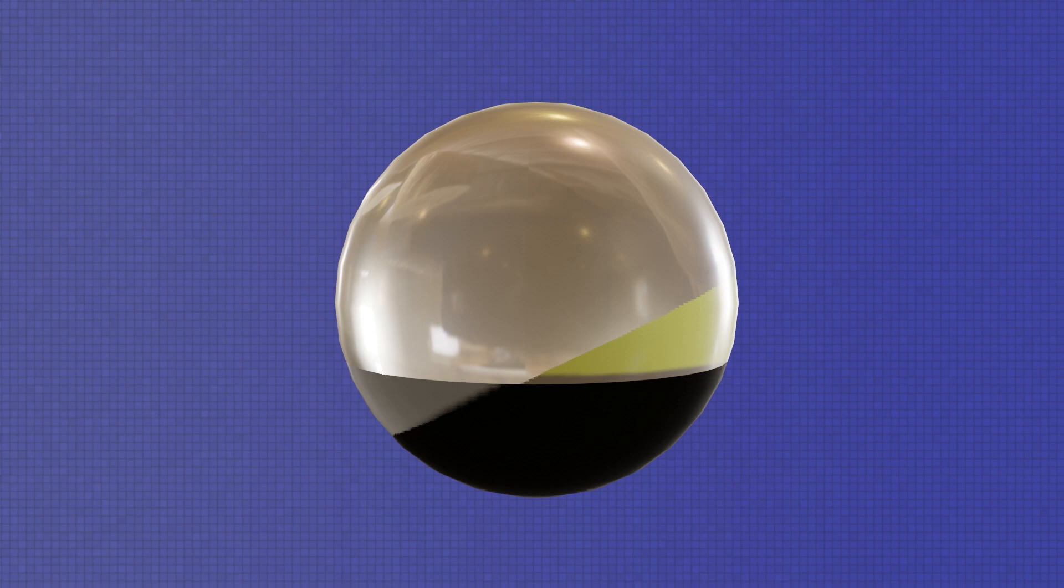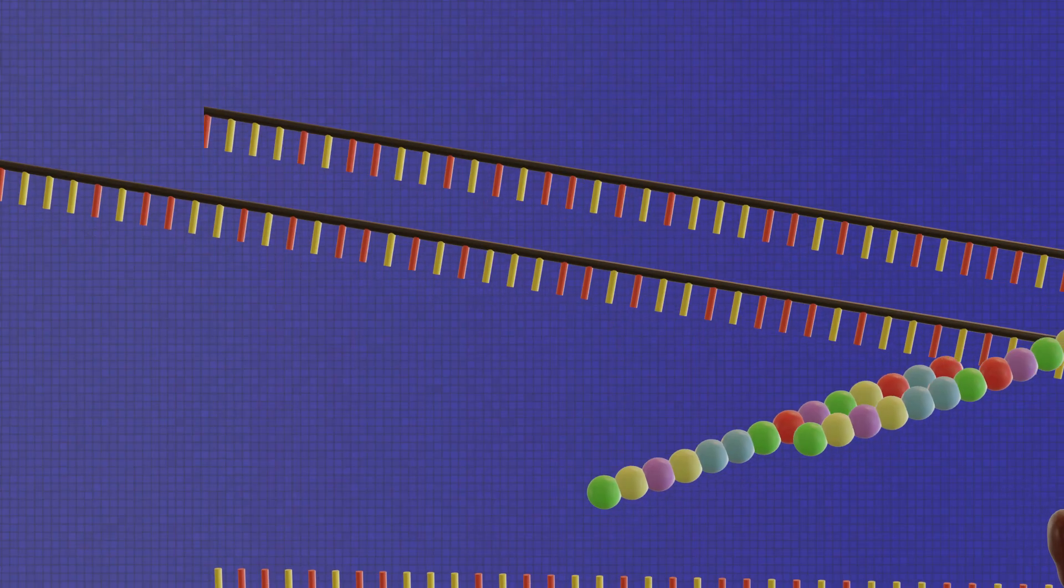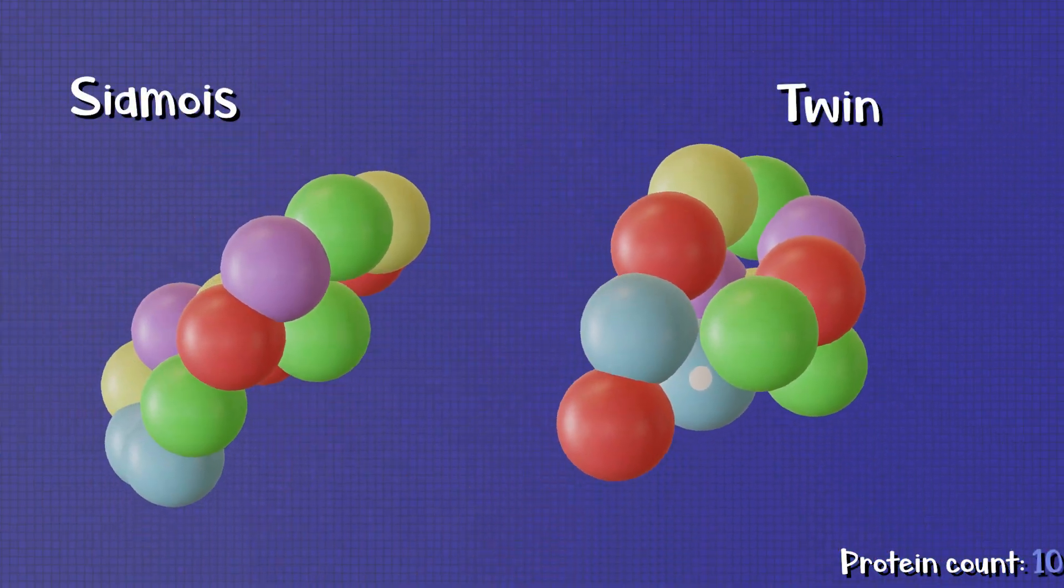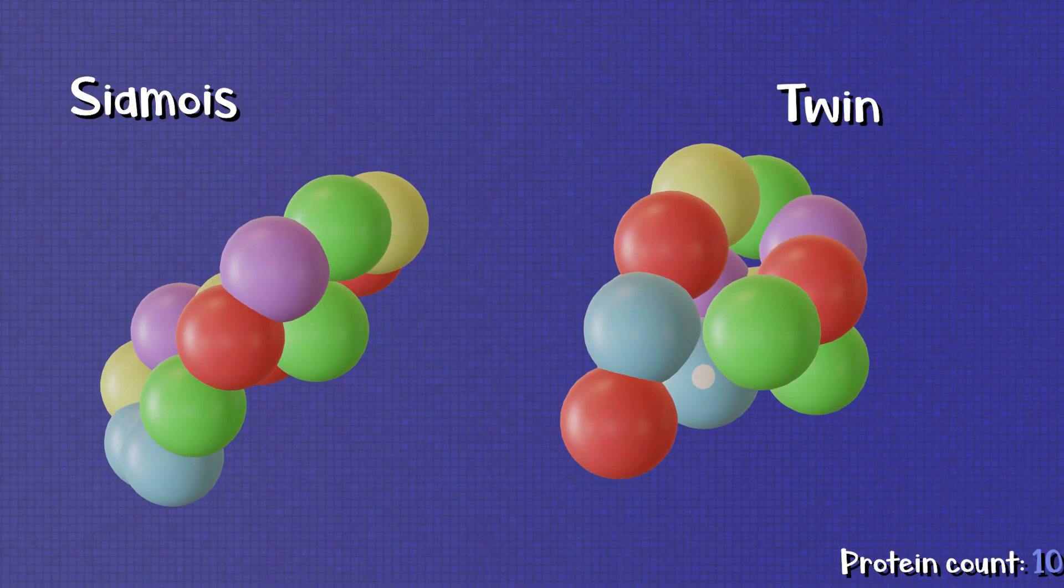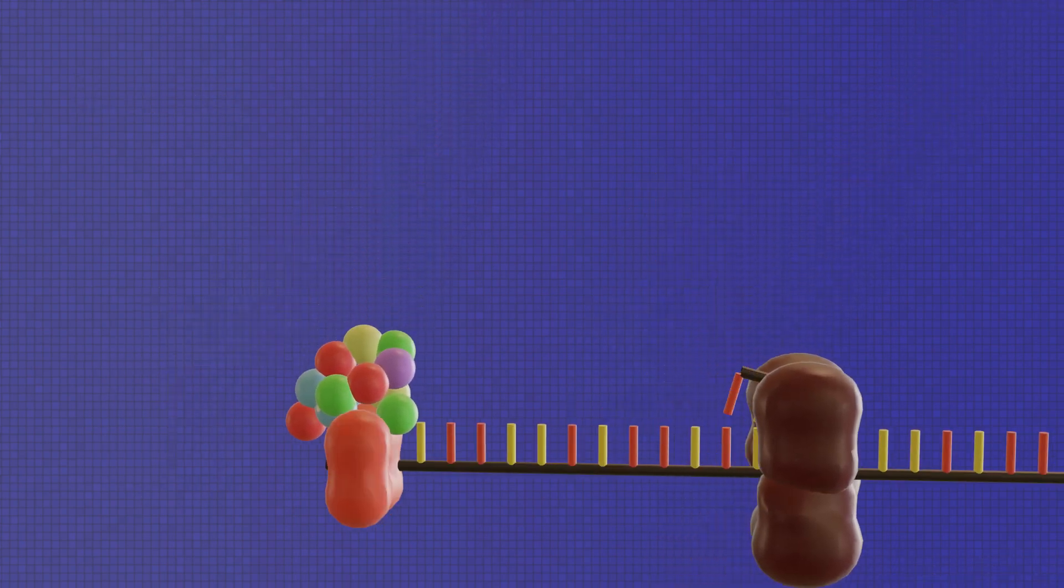After the rotation, this new environment allows beta-catenin to work undisturbed as the sheriff proteins keep the bully proteins away. Beta-catenin produces siamese and twin, and these proteins, now free from the veg-T protein of the vegetal region, can go on to activate the production of even more proteins to form dorsal structures.